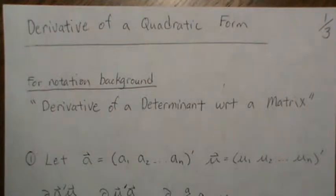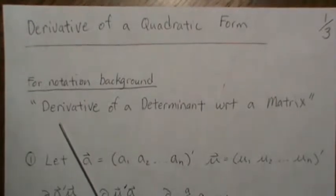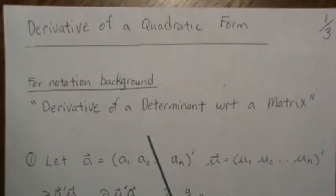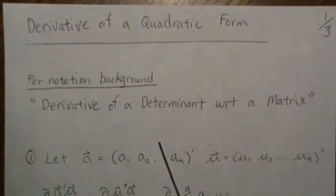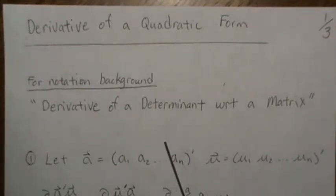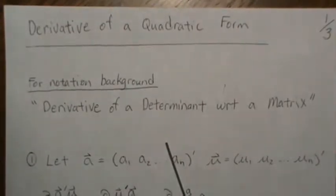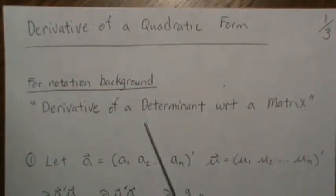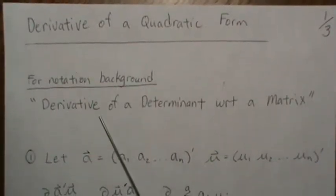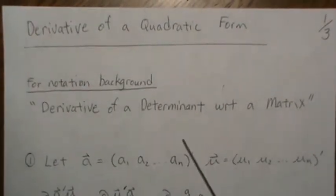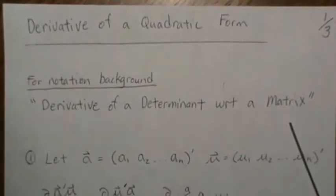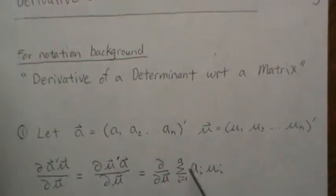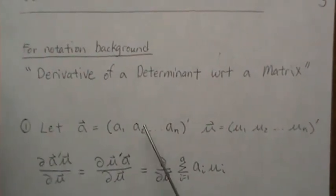This is just one more step, so let's jump right in. For more details on the notation I'm using in this video — and why the derivative of a scalar with respect to a column vector is a row vector — you really need to see my previous video on the derivative of a determinant with respect to a matrix.